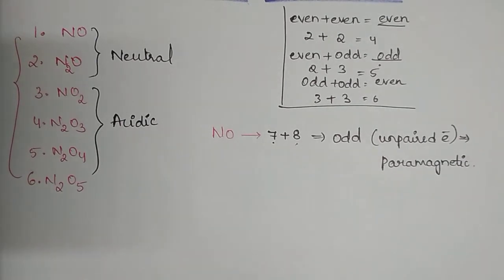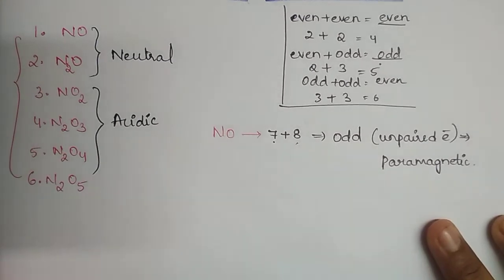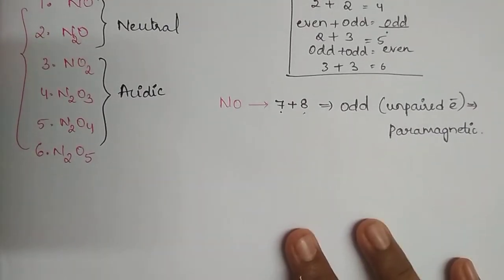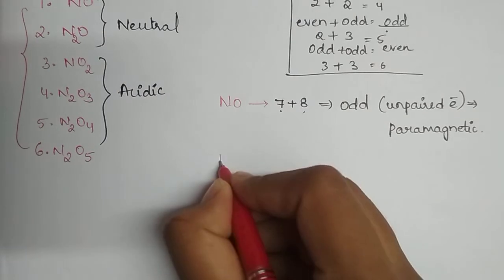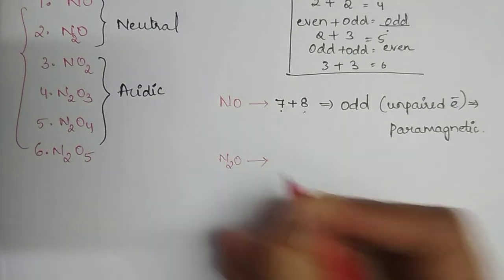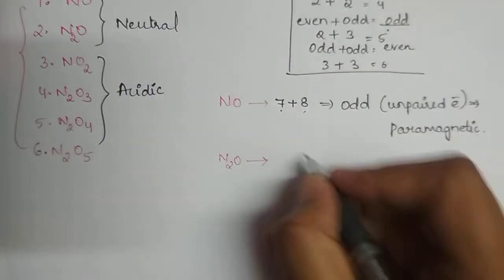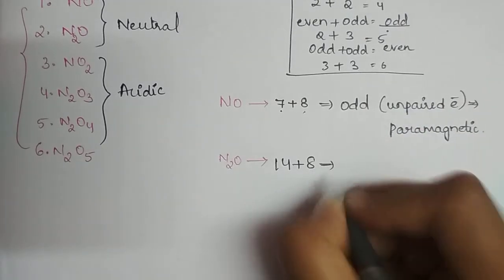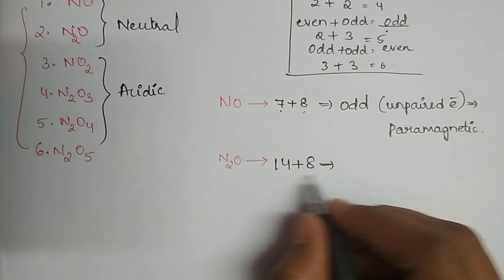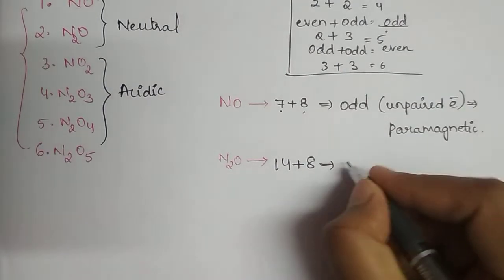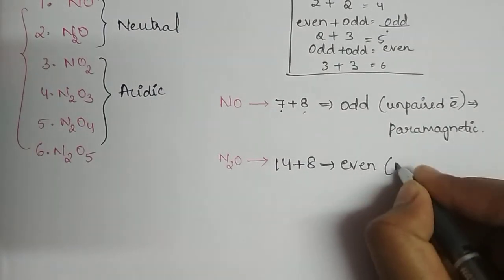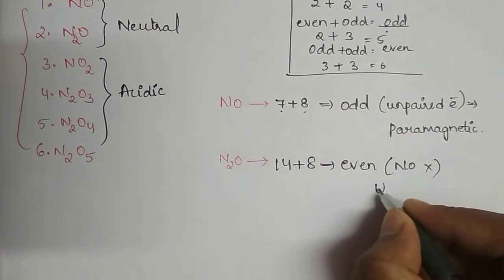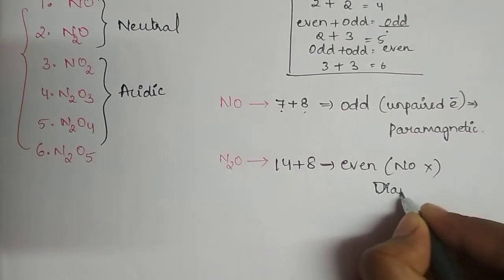Next, N2O: we have two nitrogens, so 2×7 = 14, plus one oxygen = 8. So 14+8 = 22. That is even plus even, which gives even. When we get even, there are no unpaired electrons, so N2O is diamagnetic in nature.